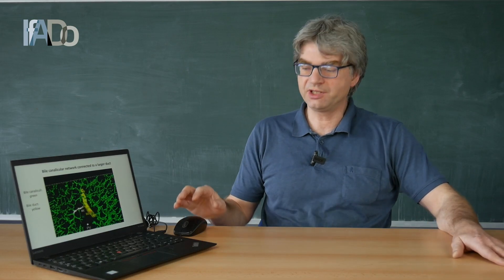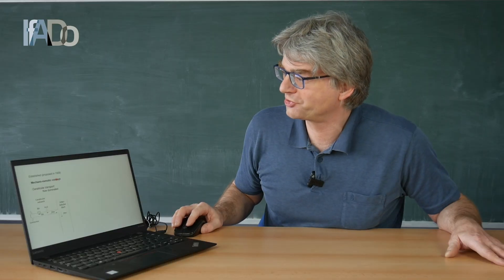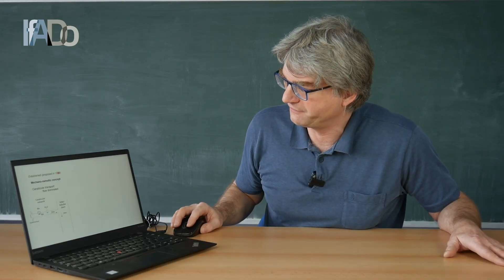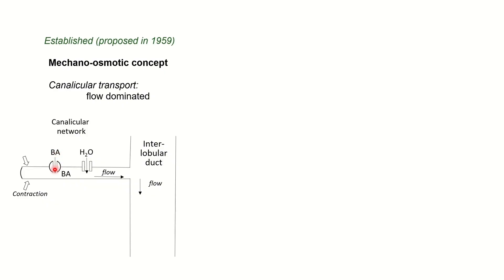How does transport in these channels occur and which mechanisms are responsible? The mechano-osmotic concept has been in all textbooks since the late 1950s. This theory says that liver cells excrete bile acids into bile canaliculi. Bile acids are osmotically active and therefore also draw water inside. Since the bile canaliculus is closed at one end, the liquid flows to the open end. Contractions of the tissue further support the flow.